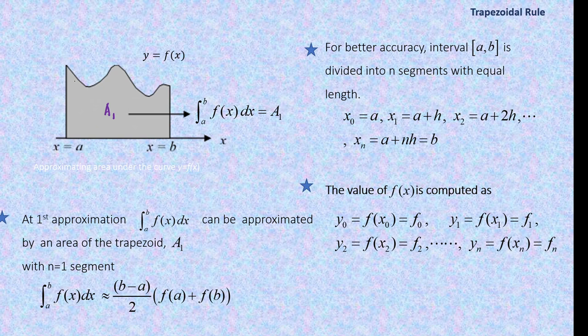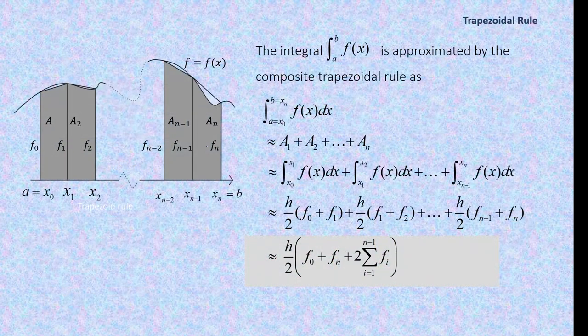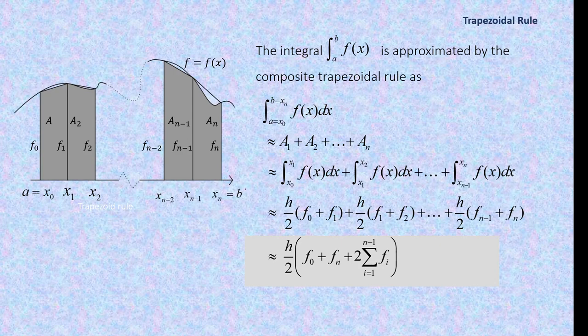For a better approximation, we can divide the interval into more segments. We'll be more accurate if we divide the area into more segments. The same curve y = f(x): if we use only one segment we get a big error, so we increase the number of segments up to n. So a = x₀, x₁, x₂, up to xₙ = b.